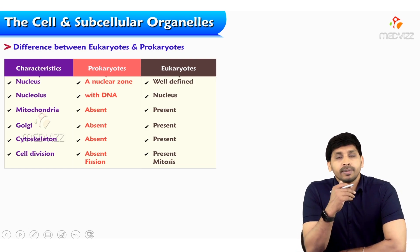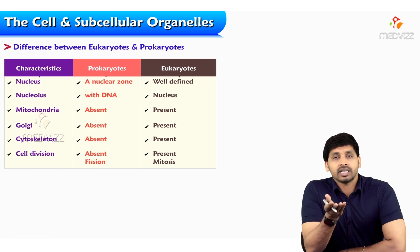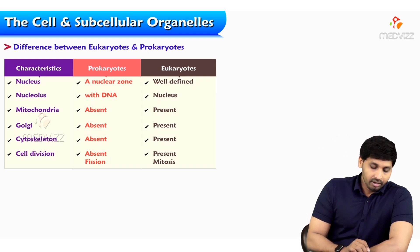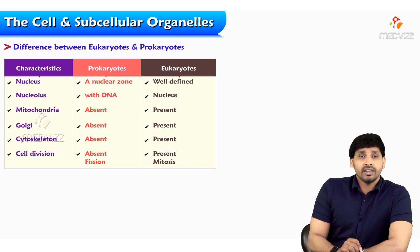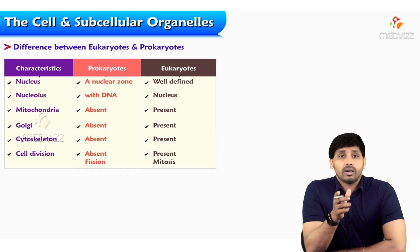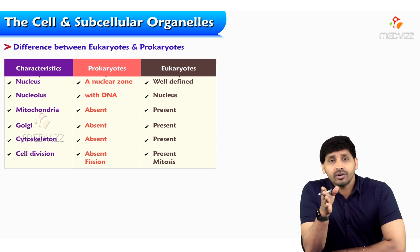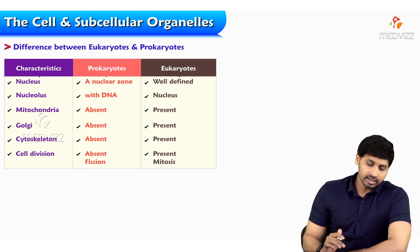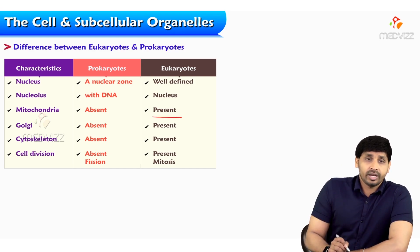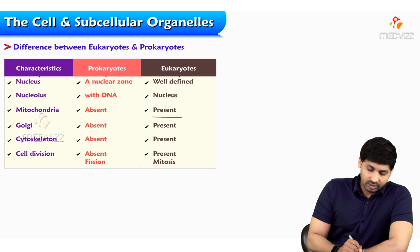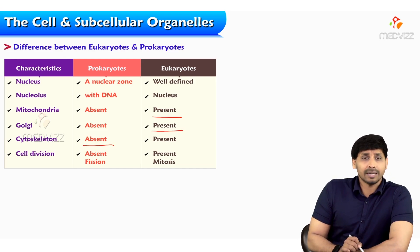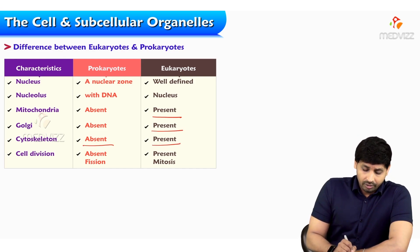Regarding the presence or absence of subcellular organelles in eukaryotes versus prokaryotes: the nucleus in prokaryotes is present only as a nuclear zone, but in eukaryotes it is well-defined with a nuclear membrane. The nucleolus in prokaryotes is attached to the DNA, whereas in eukaryotes there is simply a nucleus in which DNA is present. Mitochondria is absent in prokaryotes but present in eukaryotes. Golgi complex is absent in prokaryotes and present in eukaryotes. Cytoskeleton is totally absent in prokaryotes but present in eukaryotes.